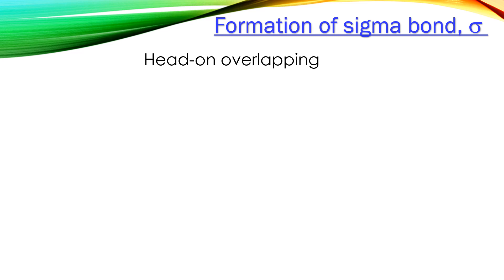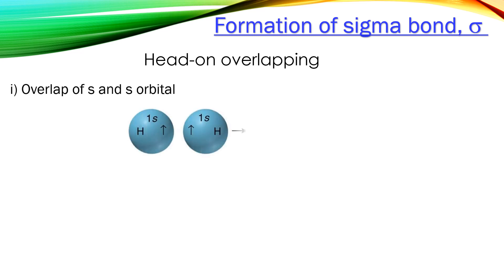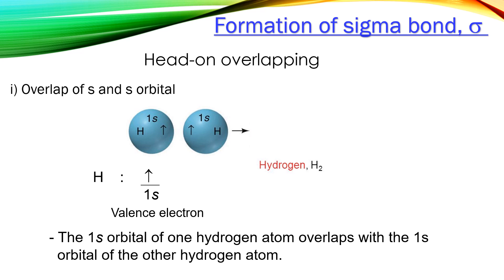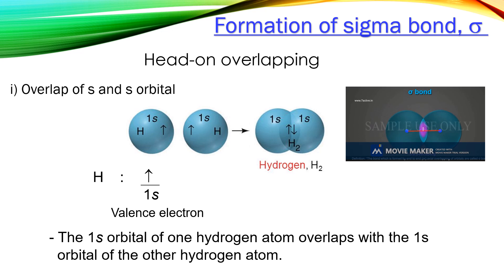There are three simple overlaps that result in sigma bonds. The first is the overlap of s-orbitals with s-orbitals. For example, in the formation of a hydrogen molecule, the 1s orbital of one hydrogen atom overlaps with the 1s orbital of the other hydrogen atom. As a result, the electrons become paired and produce a region of high electron charge density — a sigma bond is formed.